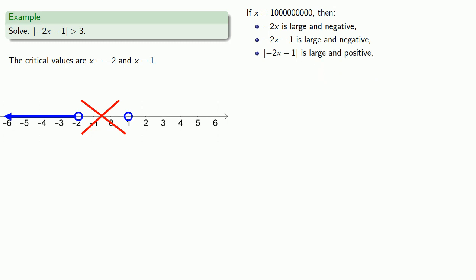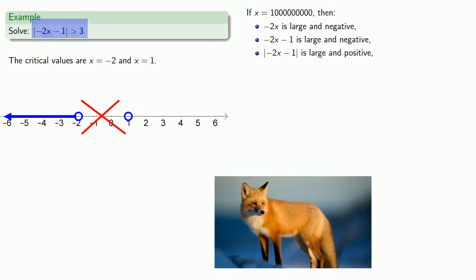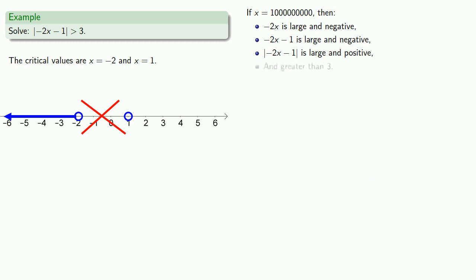But then I take the absolute value and I get a large positive number. And again, the question is: is a large positive number going to be greater than 3? And yes, a large positive number is greater than 3. That means x equals 1 billion should be in our solution set, so we should include the interval that contains x equals 1 billion.